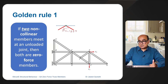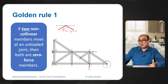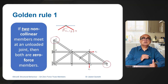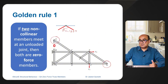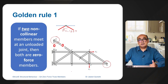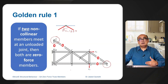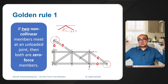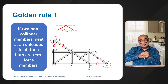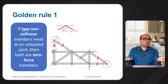If one is tension and the other is compression it will be difficult to balance the components, so if the angle is less than 180 degrees at an unloaded joint they will be equal to zero. Looking at this truss, at joint D we have two unloaded members, and at joint G we have two unloaded members. This means member HG, GF, DE, and DC will all be equal to zero.